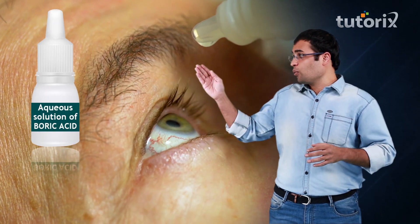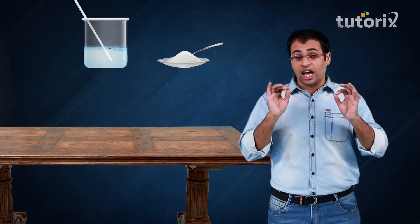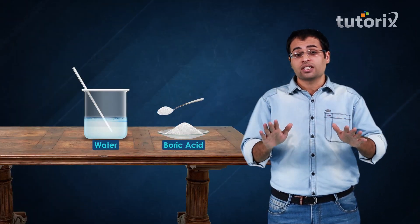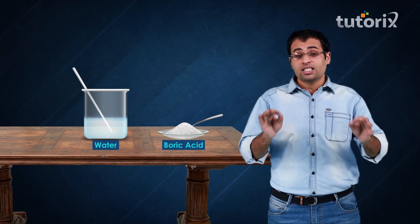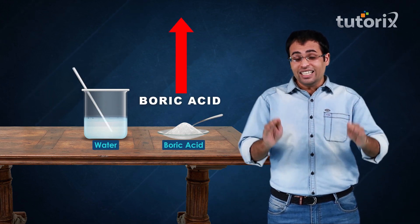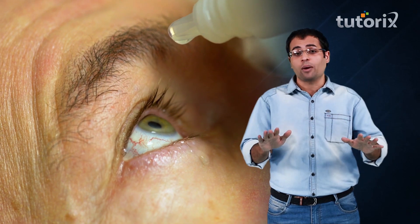Even for sensitive areas like our eyes we have an antiseptic like a dilute aqueous solution of boric acid. This dilution of boric acid is quite important because it decreases the activity of boric acid so that it does no harm to our eyes.